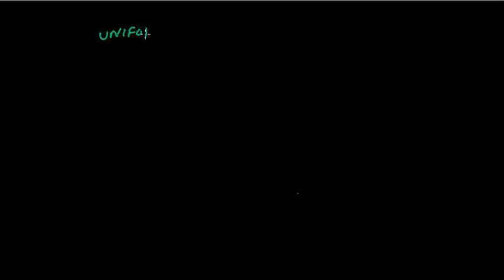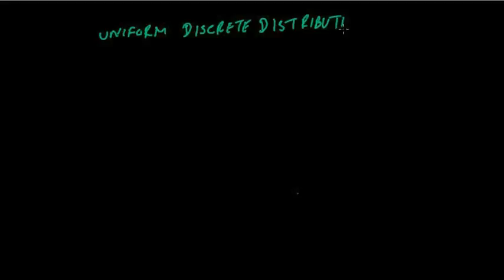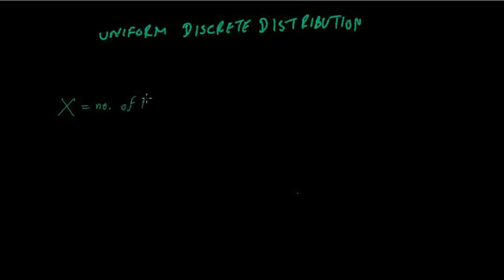Uniform Discrete Distribution is something pretty obvious from the name itself. Uniform means something that is equal — everything is equal. So when we are talking about throwing a die, the random variable is the number on the die.